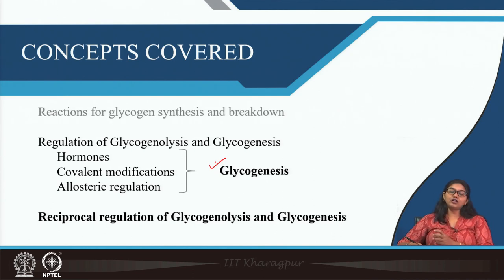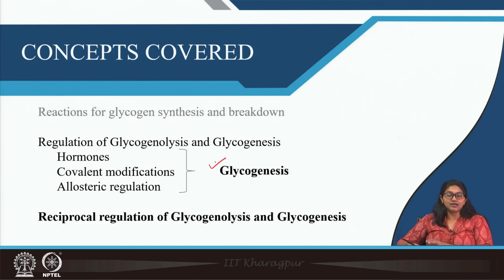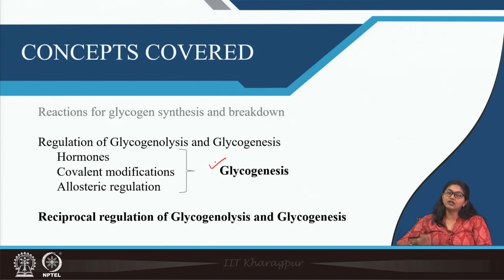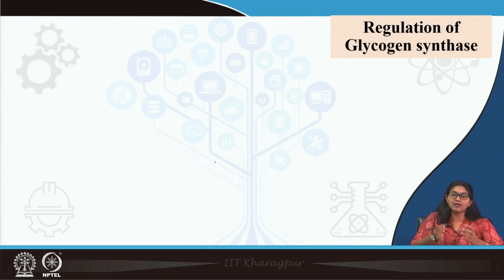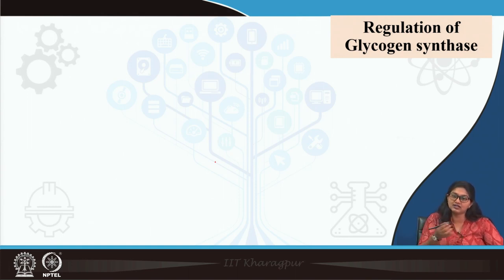This covalent modification is mostly triggered by some hormones, like glucagon and epinephrine. Enzymes of glycogen metabolism — both for glycogenesis and glycogenolysis — can also be regulated by allosteric regulators. Let us see how glycogen synthase is regulated; this is the same type of regulation we have already read in glycogen phosphorylation regulation.